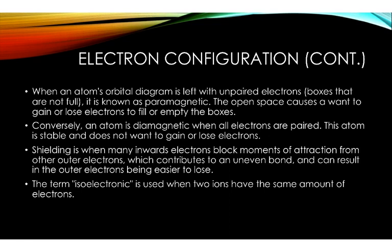Electron configuration. When an atom's orbital diagram is left with unpaired electrons, boxes that are not full, it is known as paramagnetic. The open space causes a want to gain or lose electrons to fill or empty the boxes.